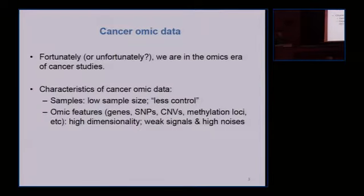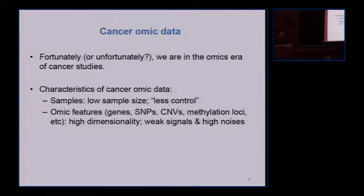Compared with more classic epidemiology studies and clinical trials in OMIC studies, what we have is usually a small sample size, and we don't have much control with what we have. We cannot really afford selecting samples, so we work with whatever we have. OMIC features can be a gene, a SNP, a methylation locus, or a microRNA.